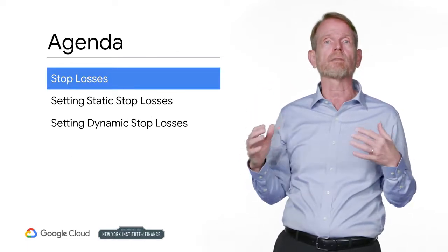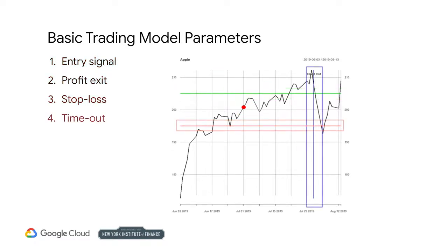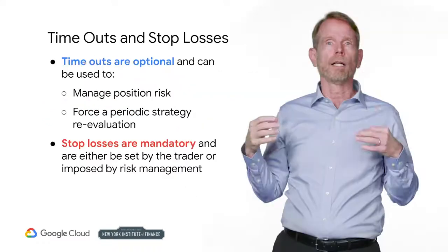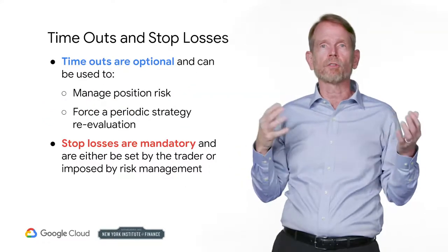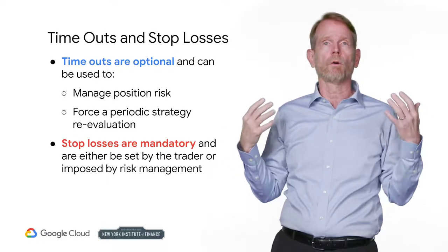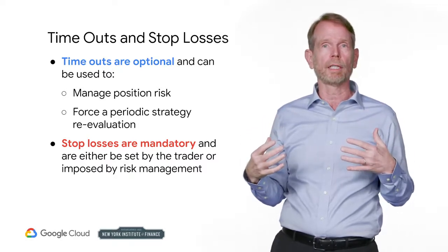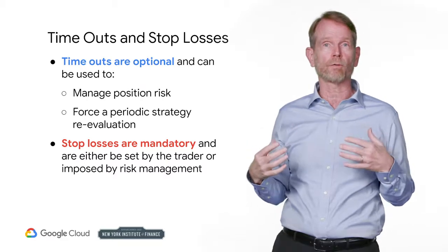First, we are going to explore different types of stop losses. In the previous section, we described the four parameters associated with the trading rule or model. There is the entry signal where you initiate a trade, the profit exit, the stop loss, and the timeout. Some traders do not care about timeouts — they will simply hold on until either the trade is profitably exited or incurs a loss against them. Almost all traders have a stop loss. If they don't choose one, their risk management may choose it for them.